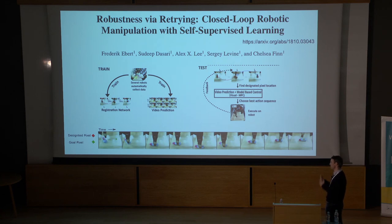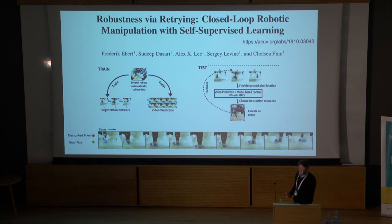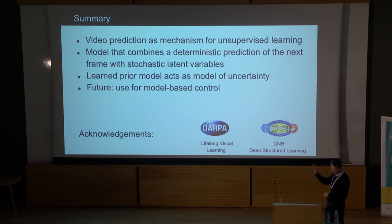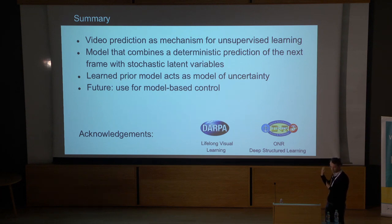The folks at Berkeley have their robots set up — we have a robot but haven't quite set it up yet to do the same thing ourselves, but that's what we'd like to try. To summarize: video prediction is a mechanism for doing unsupervised learning. The models I've been talking about combine deterministic predictions with stochastic latent variables that can encode all possible futures you might see. The key point is the learned prior — with simpler priors, the quality of predictions is dramatically worse. We're looking to plug this into model-based control frameworks to work on real problems.